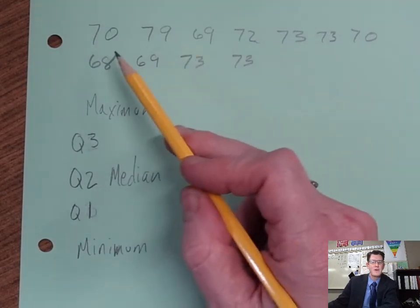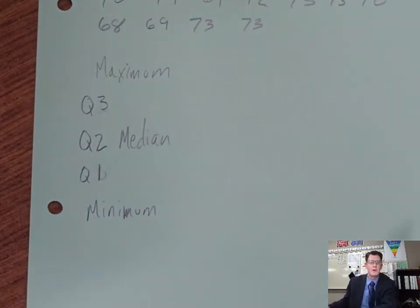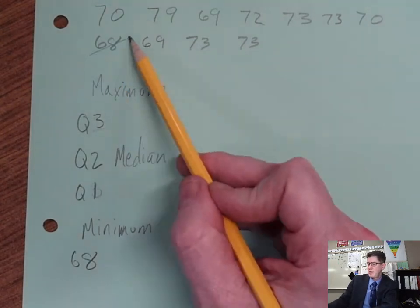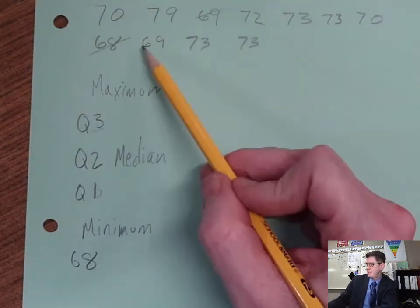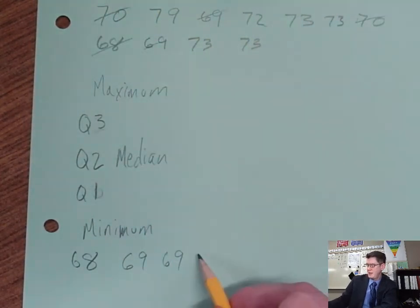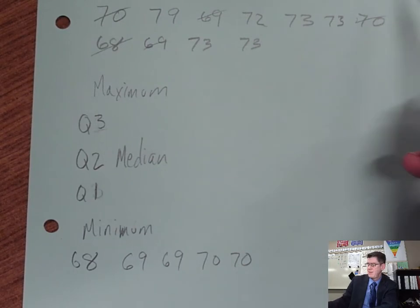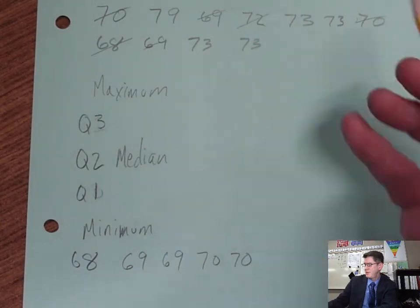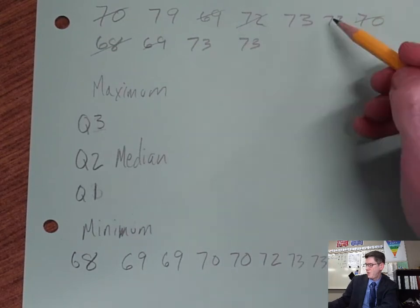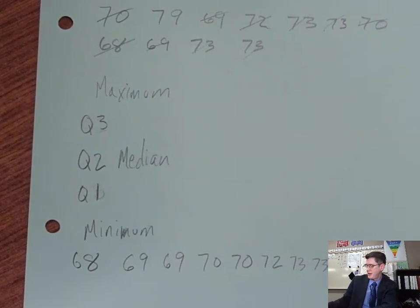So you take these numbers and the smallest number that I see is 68, so we write that one. And I see a couple of 69s, and then we've got 70s, two of them, and then we've got 72, and then there's four 73s - one, two, three, four - and then finally a 79.